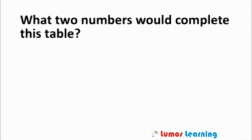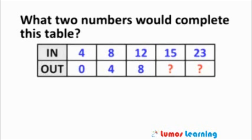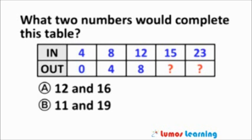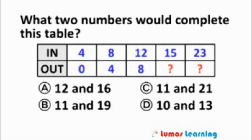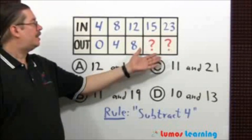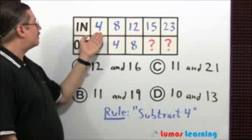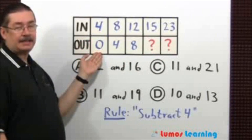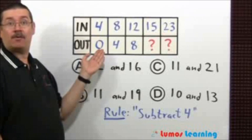What two numbers would complete this table? To complete this table, we need to find the rule. Starting at 4, what can I do to get a 0? I can subtract 4.